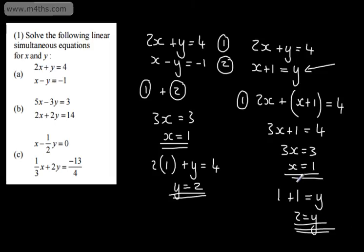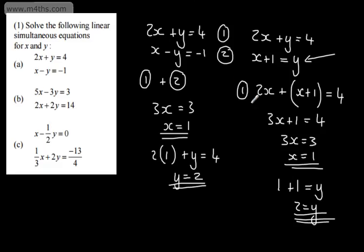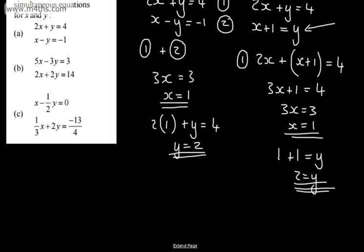So exactly the same answers as expected. We can check they hold true for both equations: 2 lots of x is 2, plus 2 gives 4; and x plus 1 is 1 plus 1, which is 2. They hold true. Let's go ahead and do the next one.